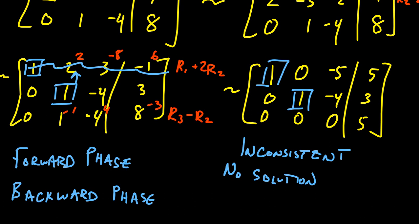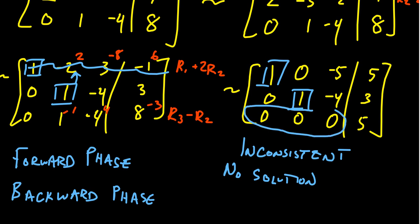One advantage of doing a forward phase first — ignoring positions above the pivots and only focusing on positions below — is that we would find this row of zeros very quickly, skipping many other calculations. Once you find that row of zeros, it tells you something immediately. In this case, it told us we had no solution because the system is inconsistent. This distinction becomes extremely critical in a course like linear algebra, where larger systems are involved.